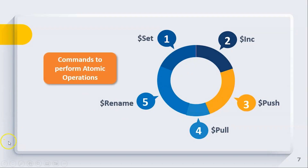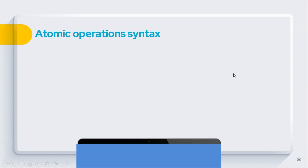There are different commands to perform atomic operations. The $set command is used to specify a key and update that particular field; if the key does not exist it creates a null value. The $inc or increment command can increase or decrease a numeric value of a document field. The $push command adds a value to an array type field — if the field doesn't exist, a new array is created. The $pull command is the opposite of push — it deletes a field from an array. Finally, $rename is used to modify a field name.